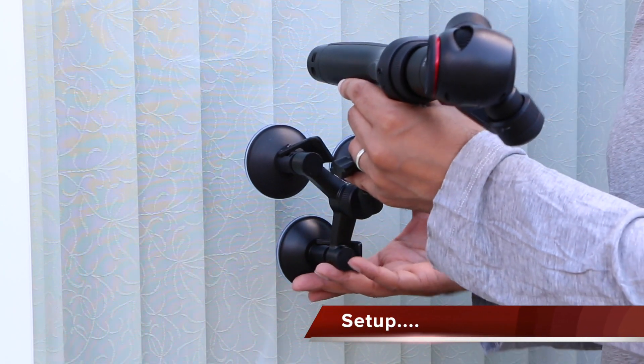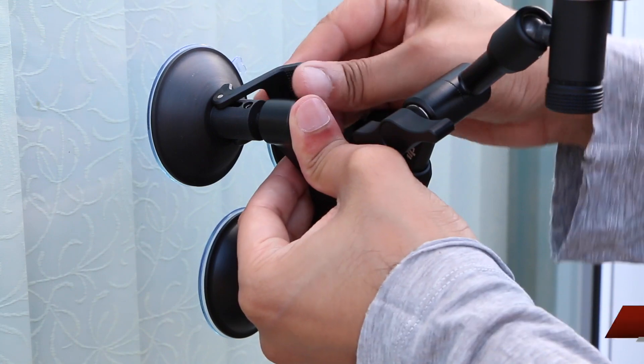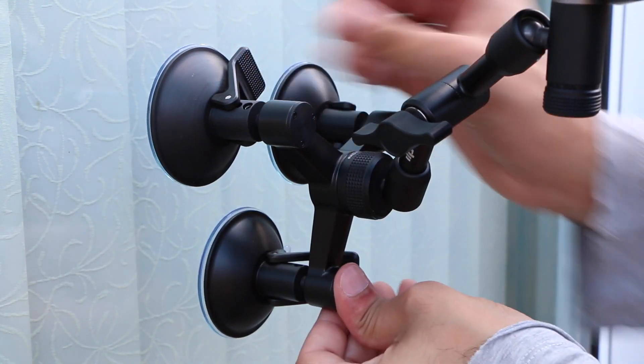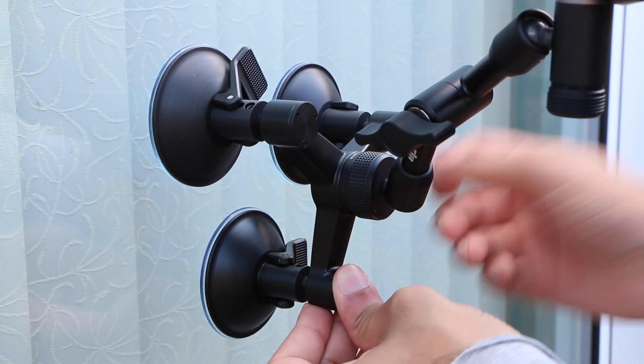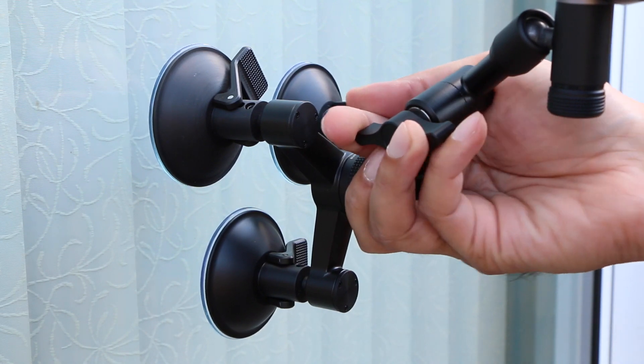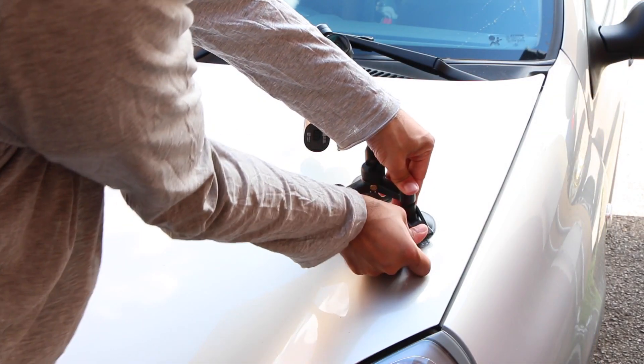Ensuring both the cup as well as the surface you're attaching to are free from any dust or debris, we can go ahead and attach to a smooth surface, ensuring the levers are fully deployed in order to create a firm suction.